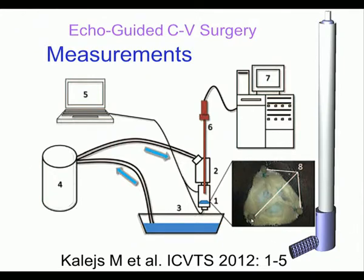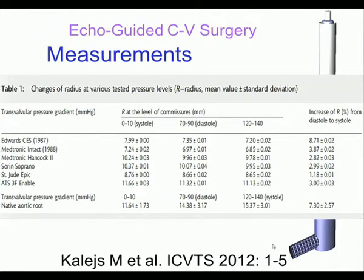You can see here a valve with ultrasonic crystals. The whole thing has to be put under water, and here we have an endoscope for visualization. We measure the pressure and have a system to load the valve with different pressures, and we can recuperate the overflow. The interesting thing to see is the last column which shows increase in radius in percent from diastole to systole. You can see all the valves tested and the native aortic root — pressurizing from 0 to 120 gives about 7% difference in stent post radius.